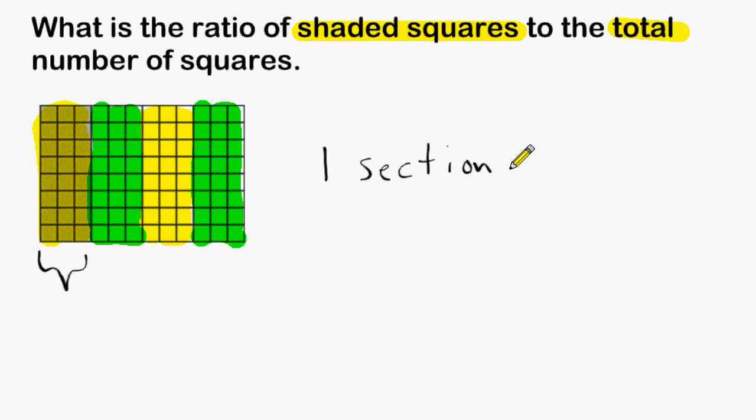Because the problem is asking for the total number of squares, we would have to say that there are four total sections altogether. Notice they want us to compare this one shaded section to the total number of squares, and we can see that there are four total sections of squares.